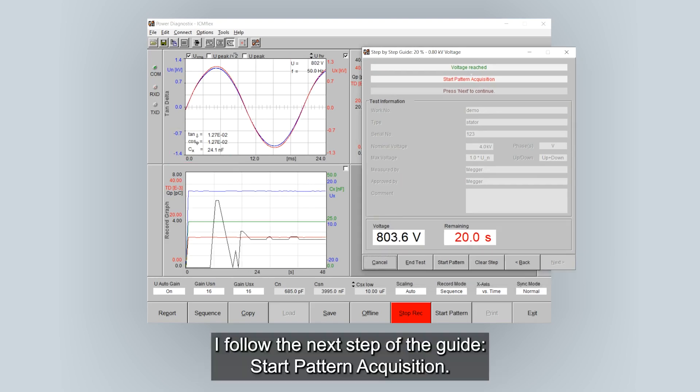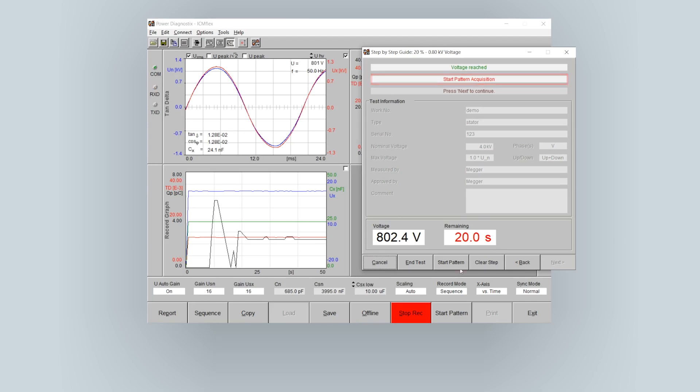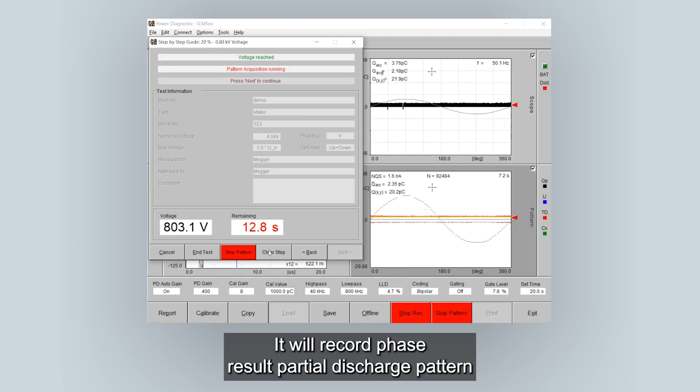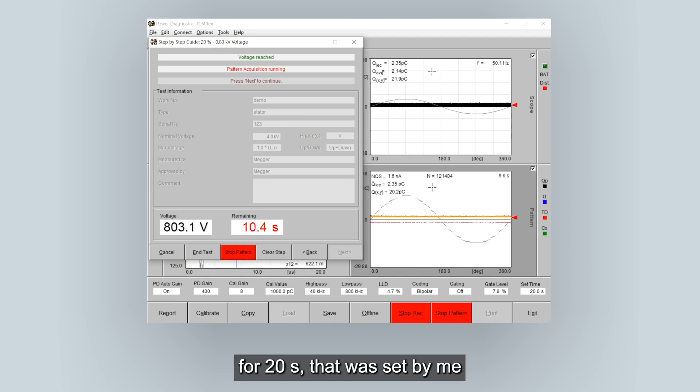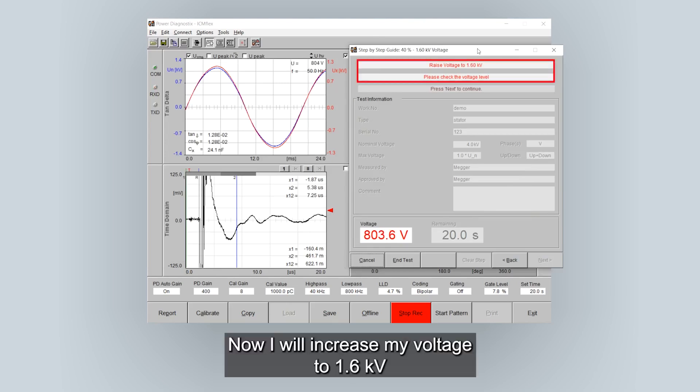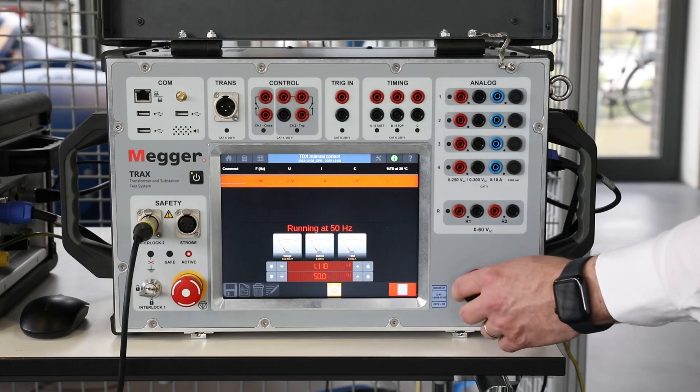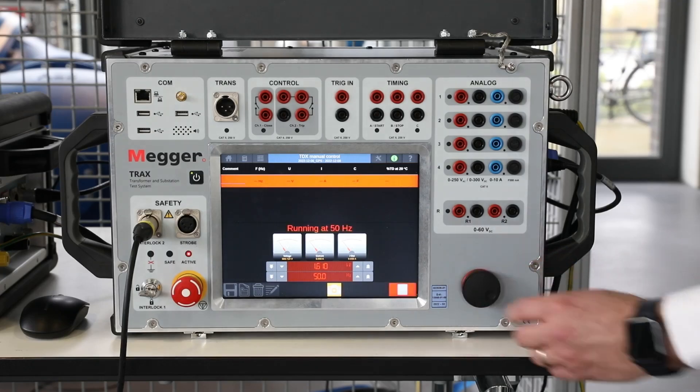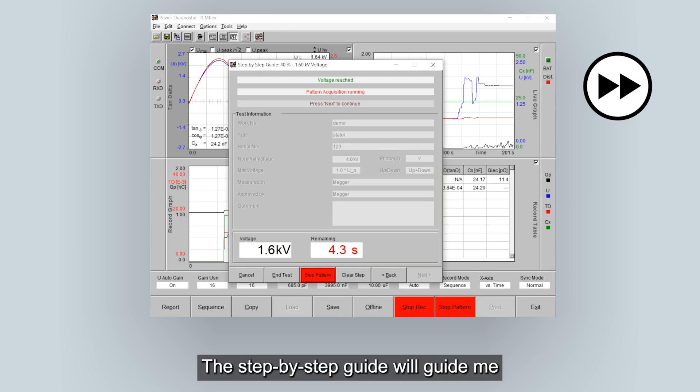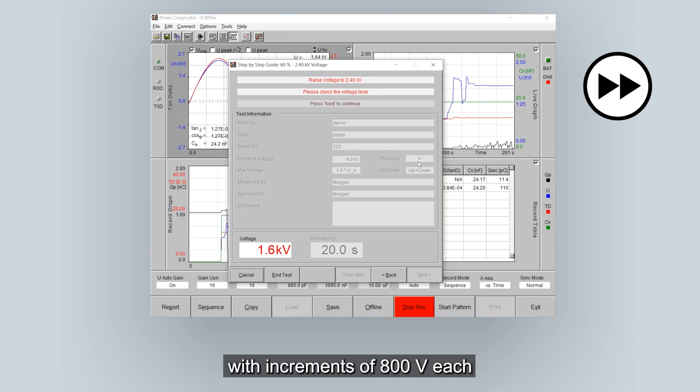I follow the next step of the guide. Start pattern acquisition. It will record phase result partial discharge pattern for 20 seconds. That was set by me initially. Press next to continue. Raise voltage to 1.6 kV. Now I will increase my voltage to 1.6 kV using my Trax.